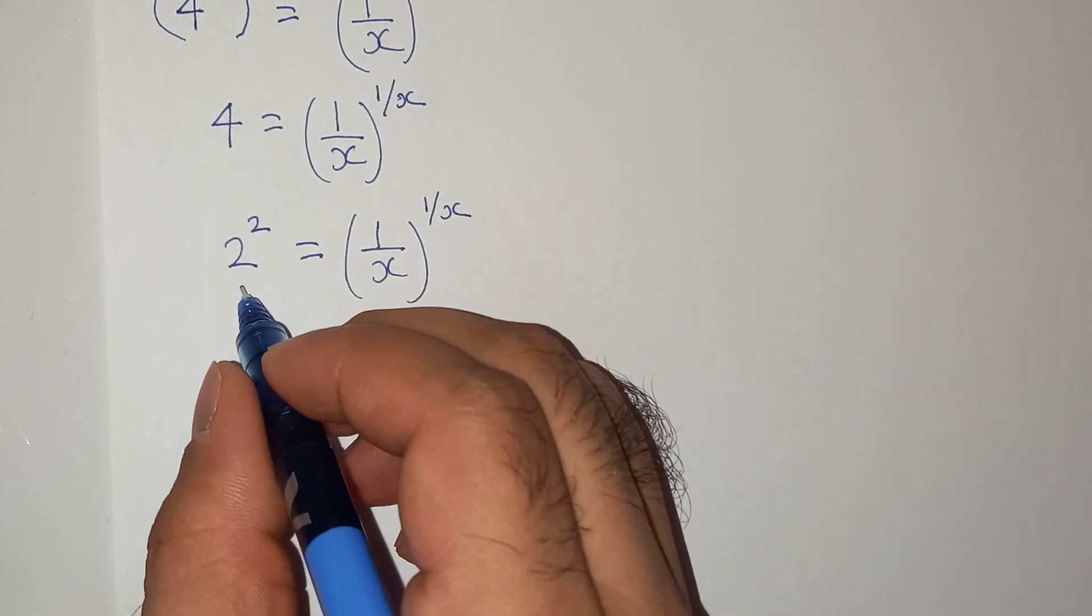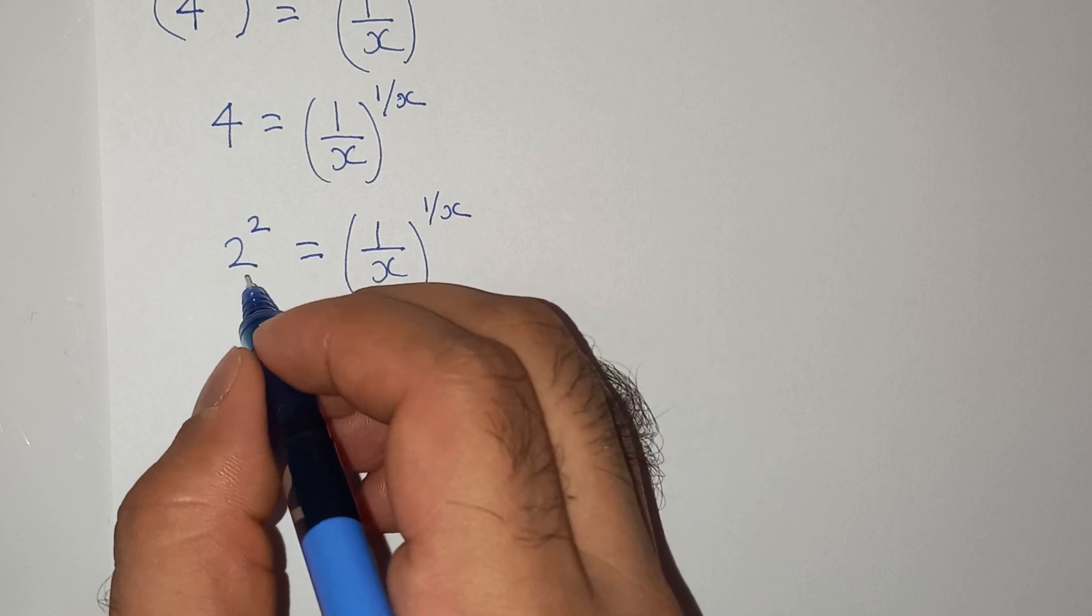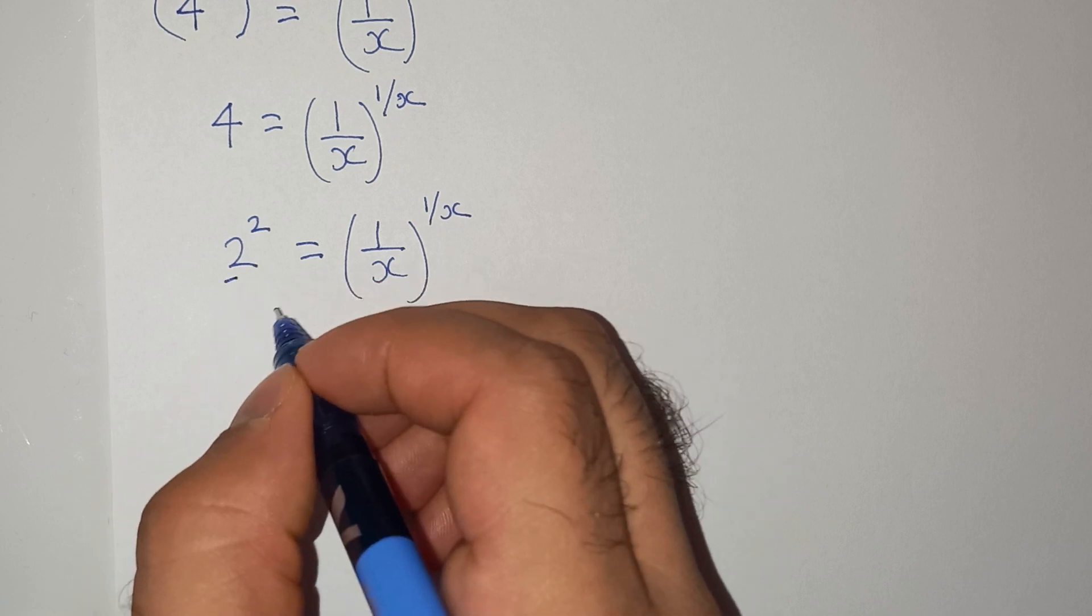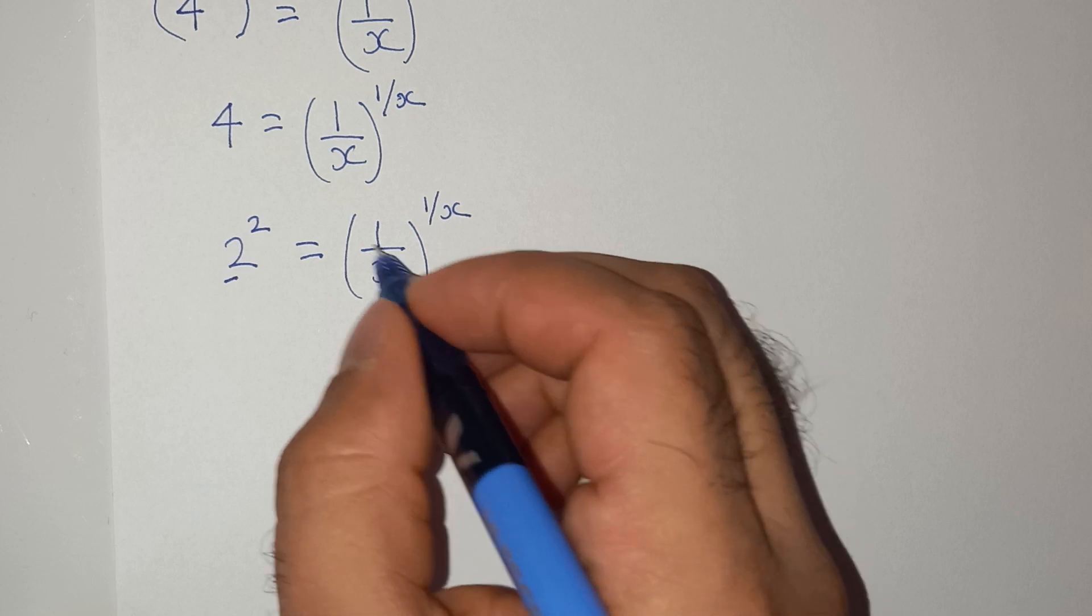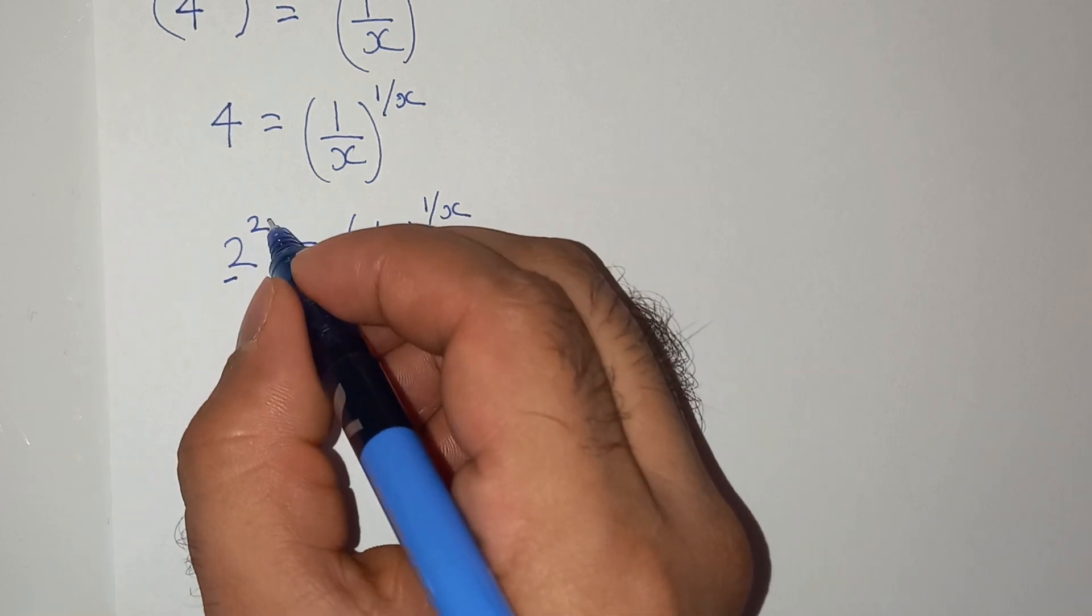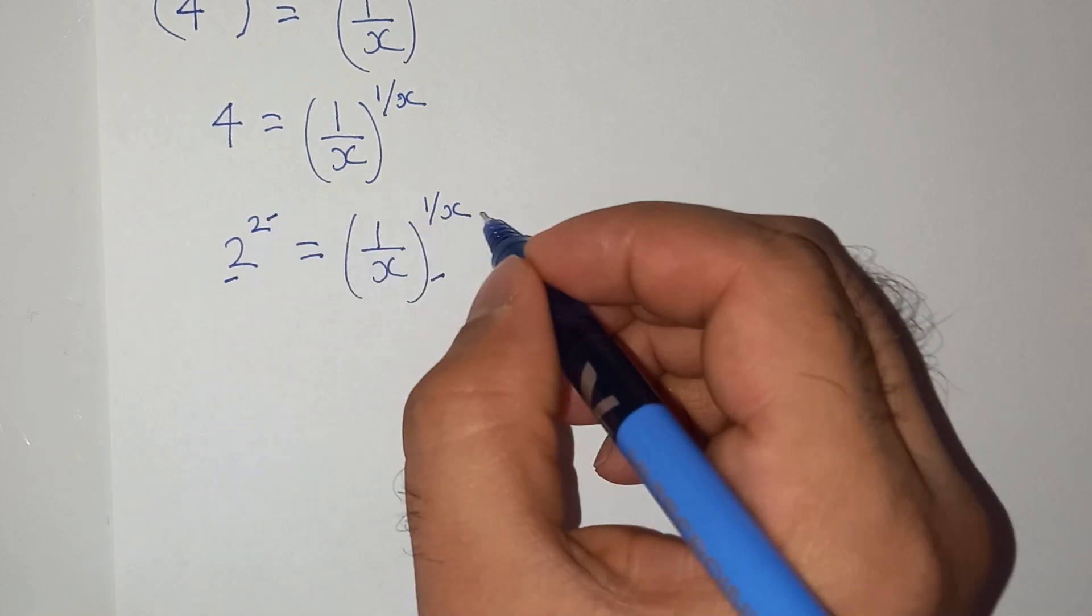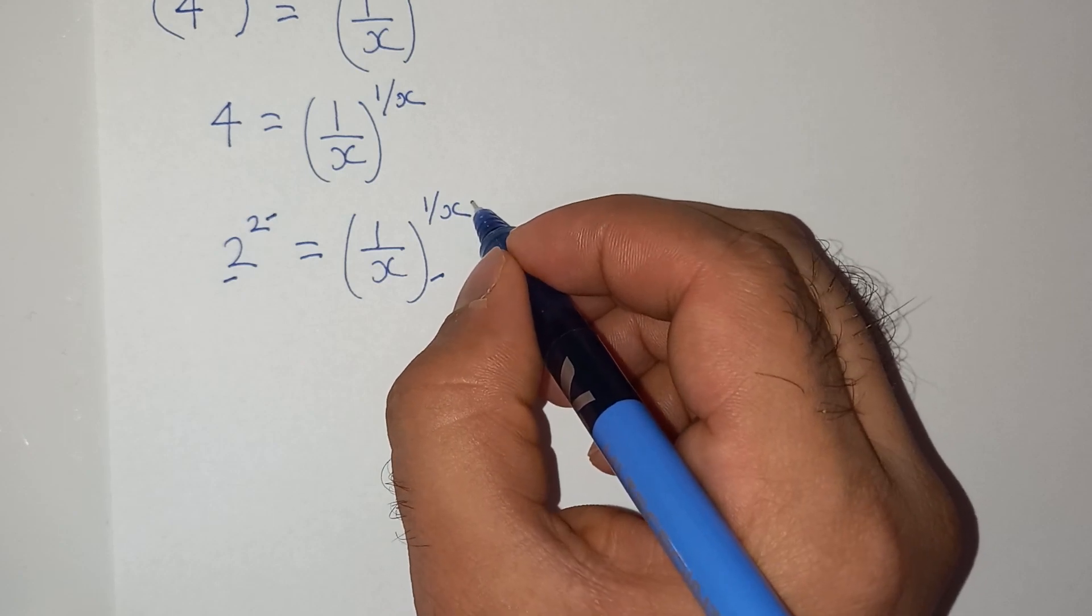Now you can compare the left hand side and the right hand side. On the left hand side, the base is 2 and on the right hand side, the base is 1/x. On the left hand side, the exponent is 2, and on the right hand side, the exponent is 1/x.